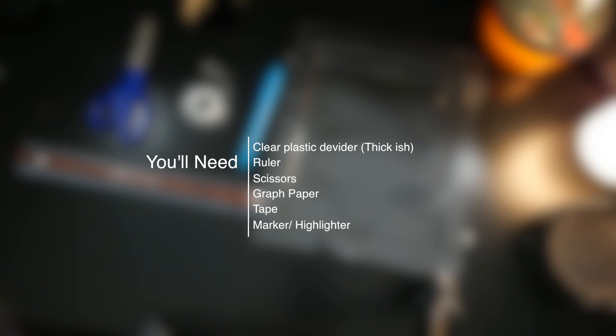You're going to need a ruler, some scissors, some tape as well as a marker or highlighter. I use a highlighter because it's washable so that it's not permanent on the plastic that I will be outlining on.